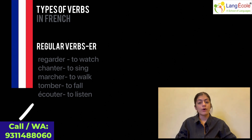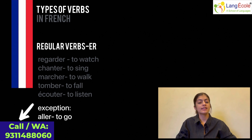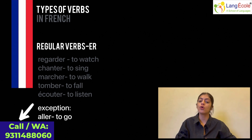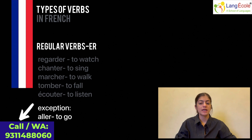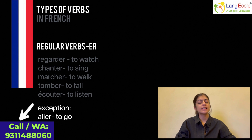There is, however, one exception from this category — that is the verb aller, which means to go. This verb comes under irregular verbs and does not follow the patterns of conjugation that ER verbs follow.